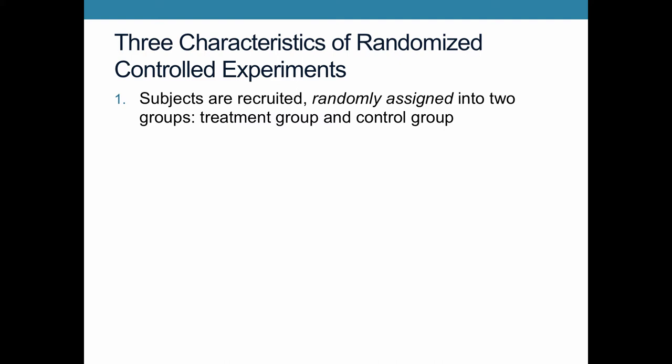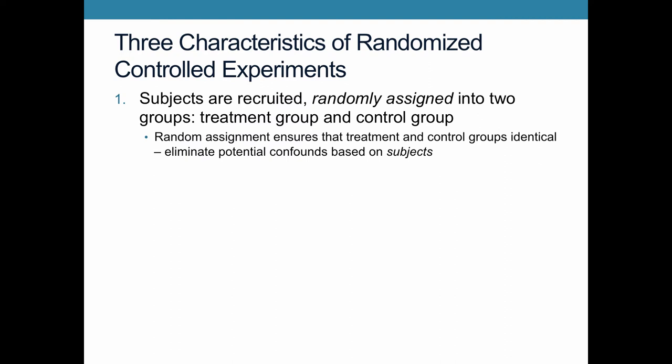The first characteristic is that subjects are recruited and then randomly assigned into two groups: the treatment group and the control group. This means that you should have no difference between the two — you are ensuring that the treatment and the control groups are identical, and because you've randomly assigned them, you're eliminating potential confounds that are based on the subjects.